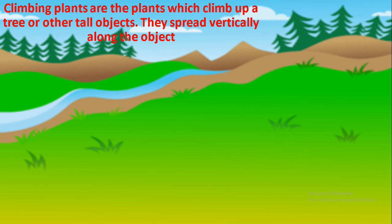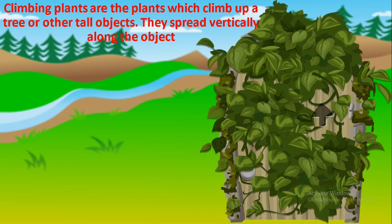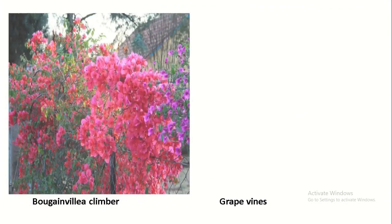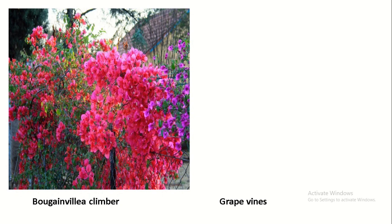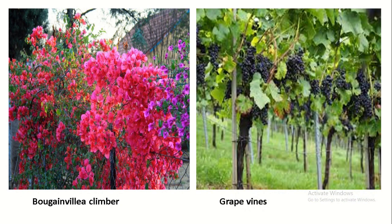Climbing plants are the plants which climb up a tree or other tall objects. They spread vertically along the object. They have leaves and tendrils. For example, bougainvillea and grapevine.